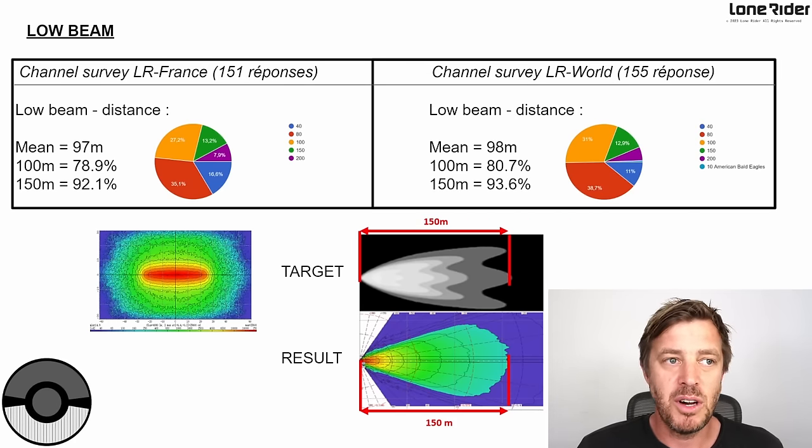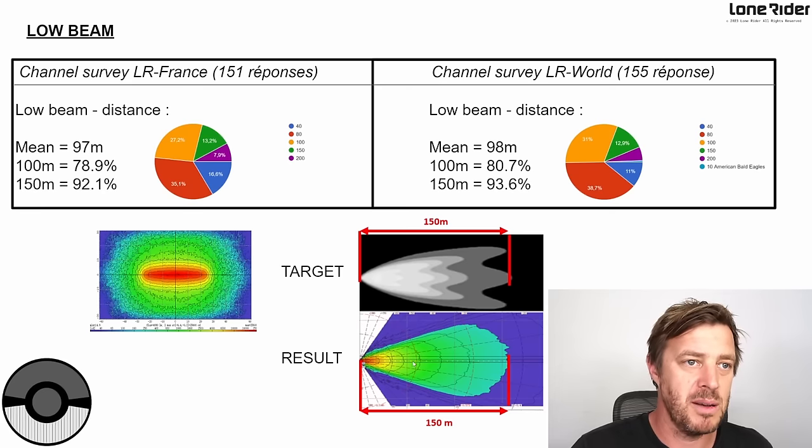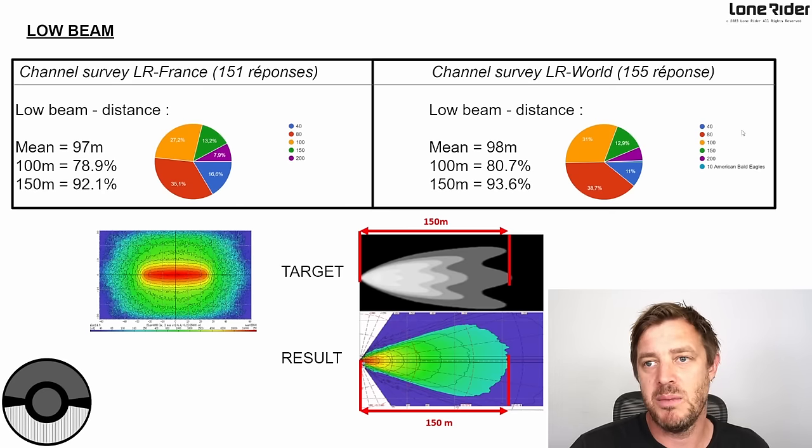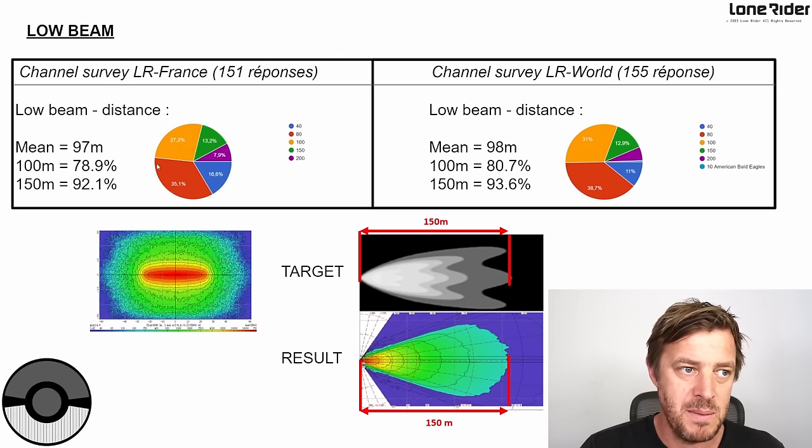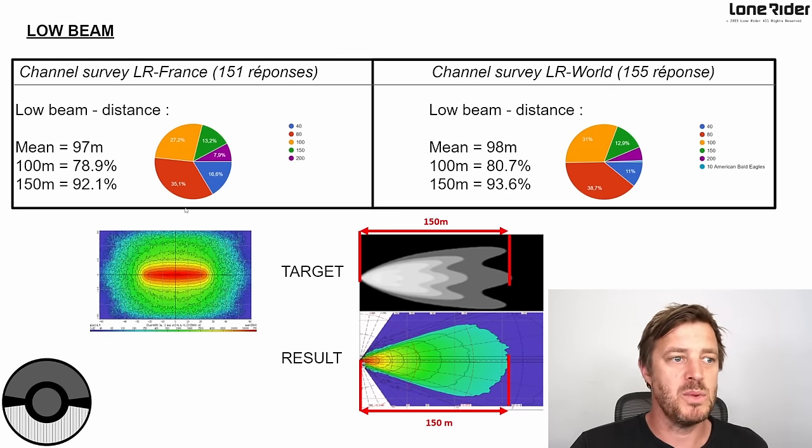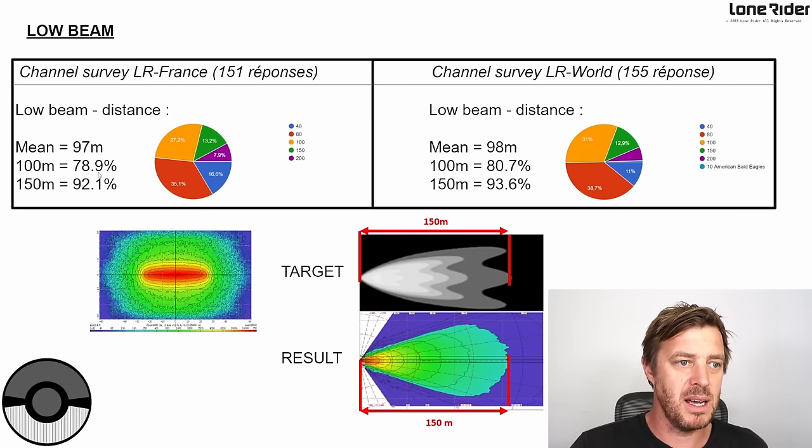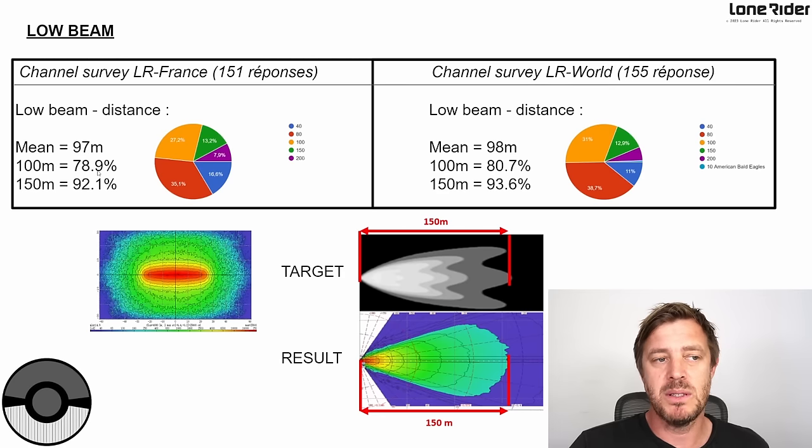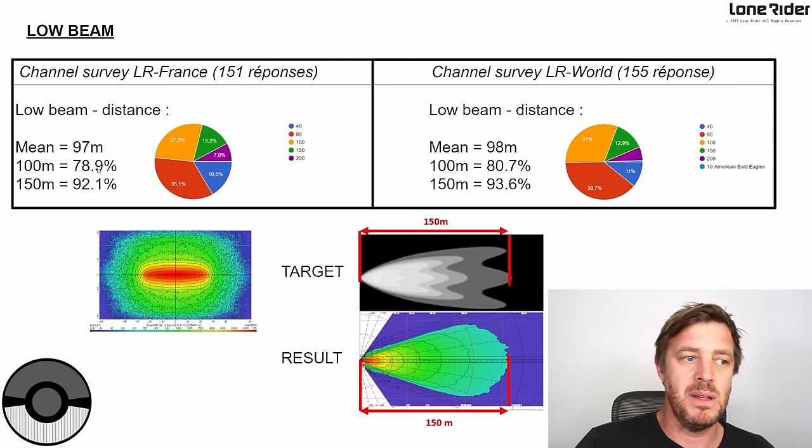Going back to the surveys, we've got two different - on the left side you've got the French channel and the international channel. The results from the mean for the low beam: at 100 meters, 75% of people wanted 100 meters for the low beam. That's just your general driving light and that's quite a good distance. You probably want a bit more than that if you're traveling at higher speeds so you can stop faster.